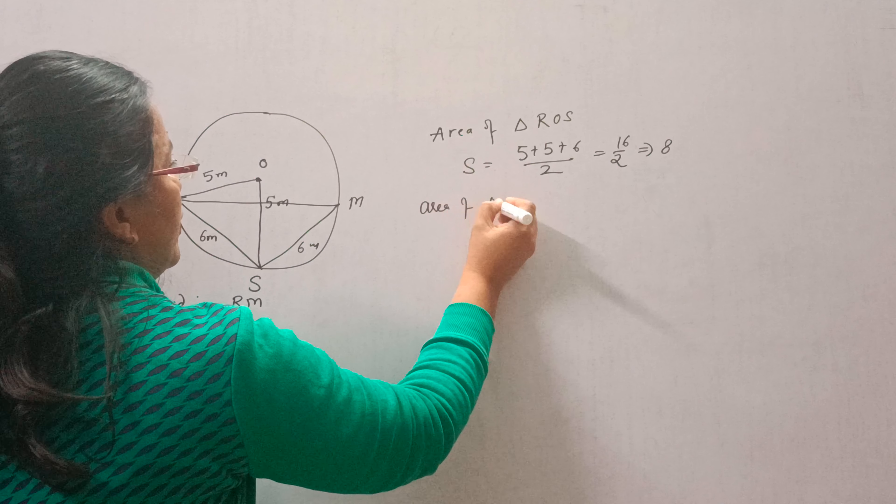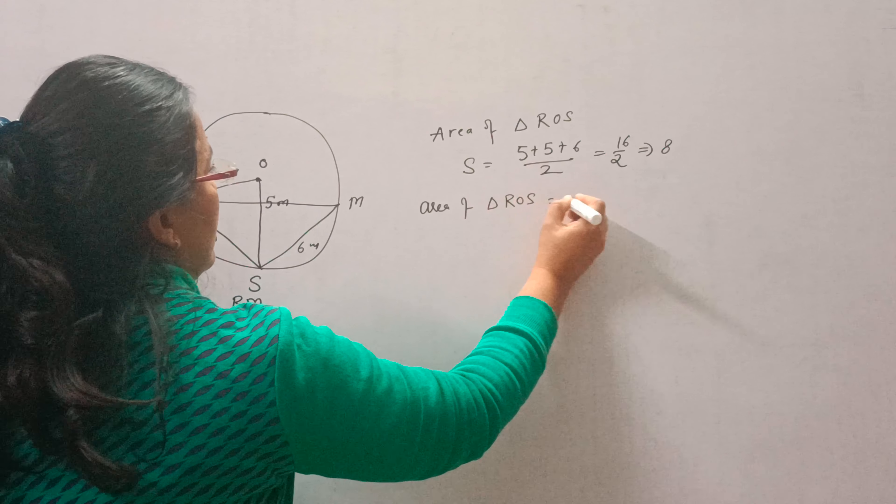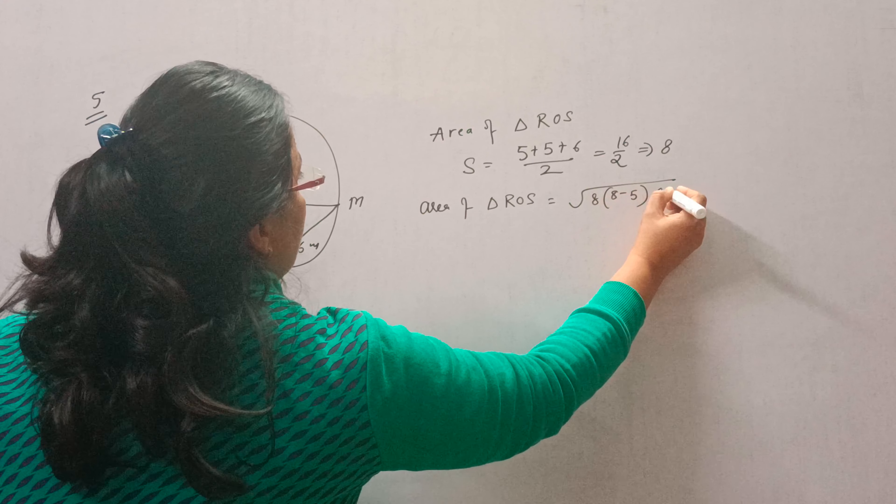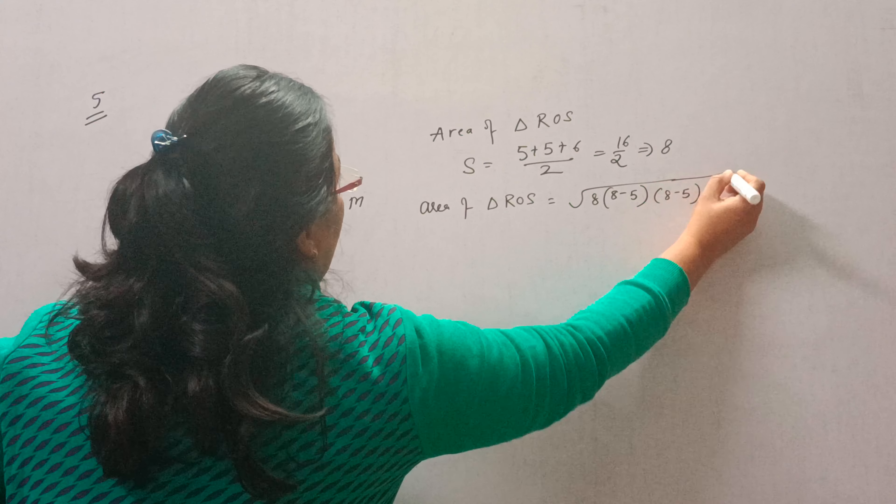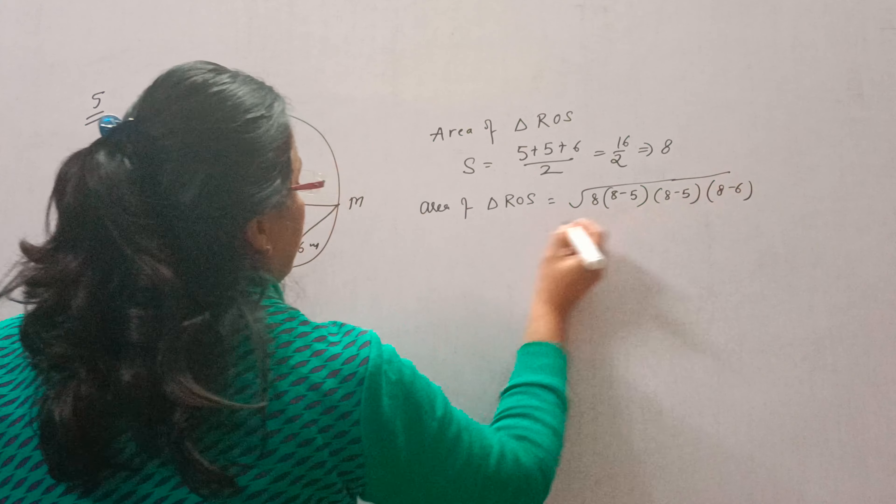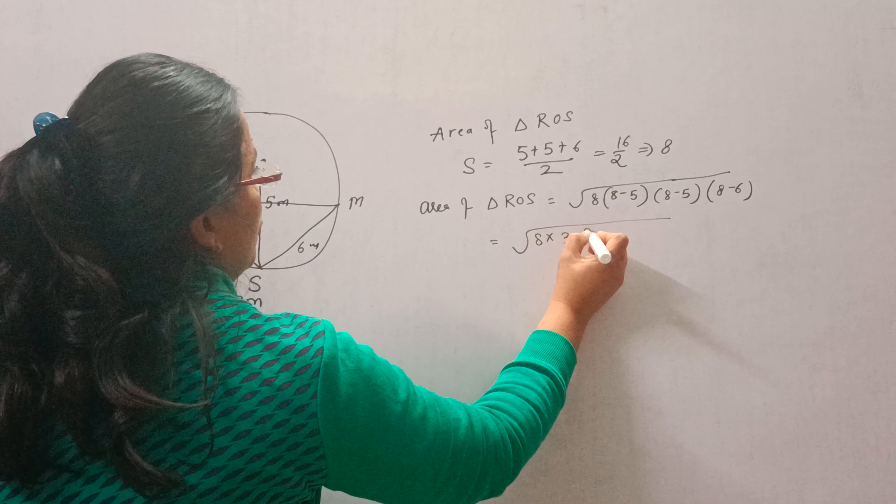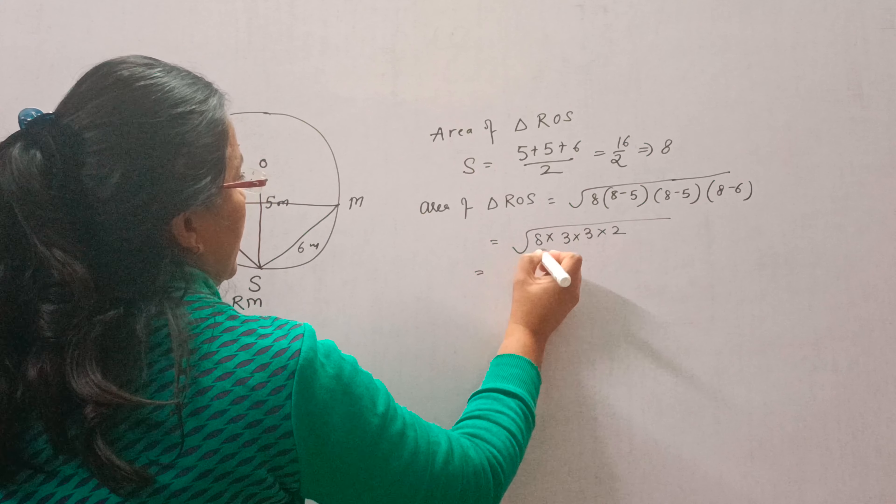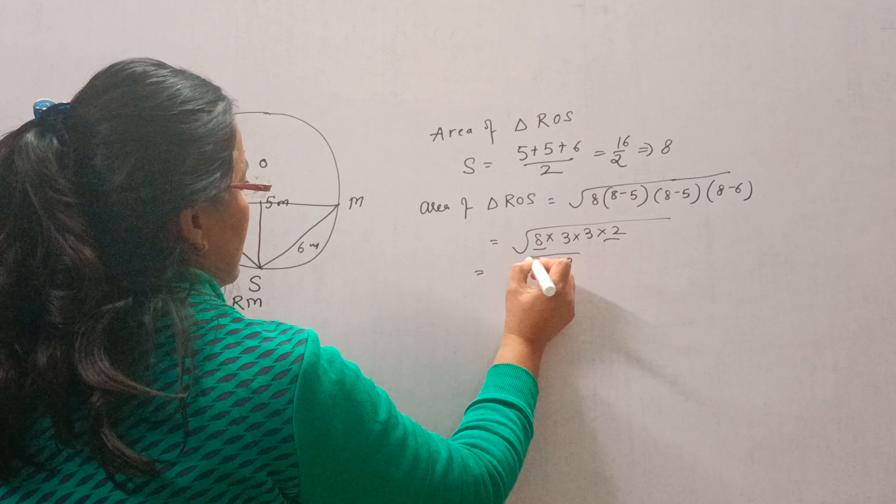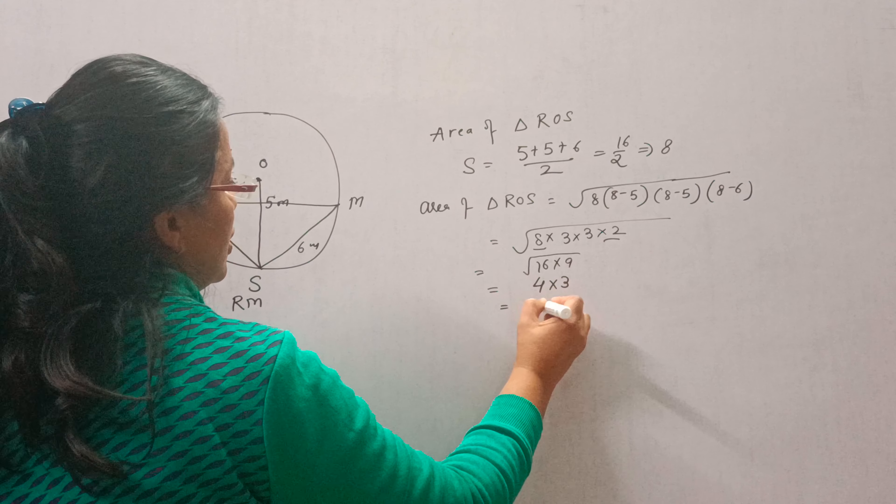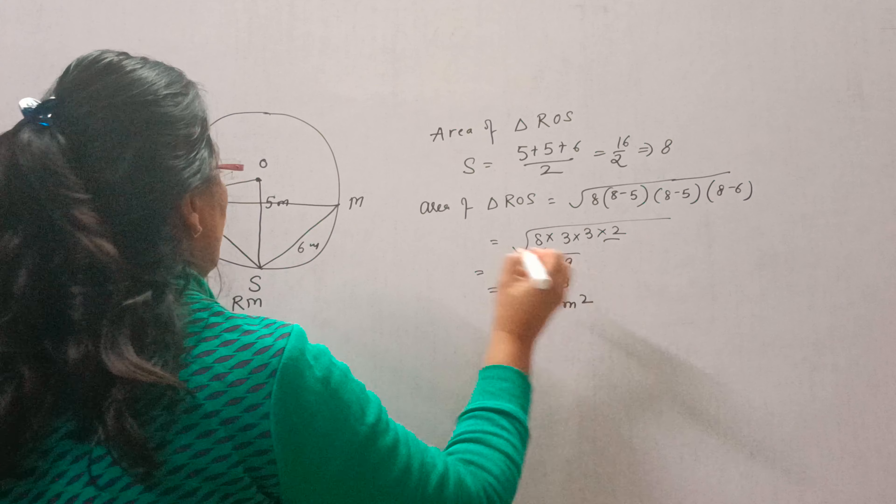So area of triangle ROS will be square root of S times S minus A times S minus B times S minus C. This will be square root of 8 times 3 times 3 times 2. 8 times 2 is 16, 3 times 3 is 9. Square root of 16 is 4, square root of 9 is 3. So this is 12 meter square.